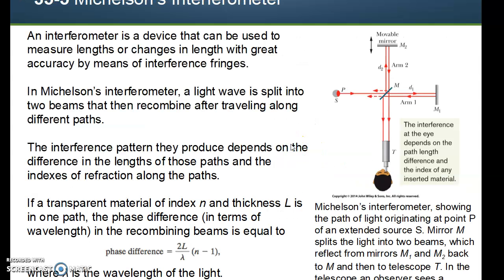The final section in the book is Michelson's interferometer. This is how an interferometer is a device that can be used to measure lengths or changes in lengths with great accuracy by means of interference fringes. In a Michelson interferometer, a light wave is split into two beams that then recombine after traveling along different paths. The interference pattern they produce depends upon the differences in the lengths of those paths and the index of refractions along those paths. If a transparent material of index n and thickness L is in one path, the phase difference is given by this term right here, 2L over lambda times n minus 1.